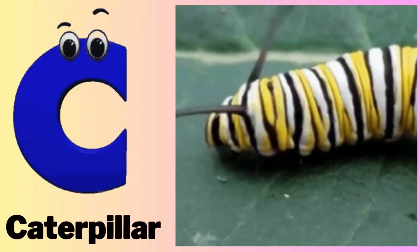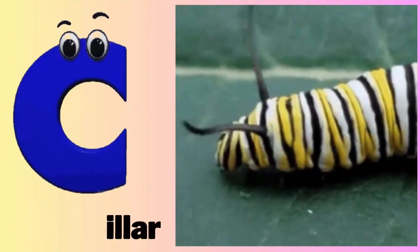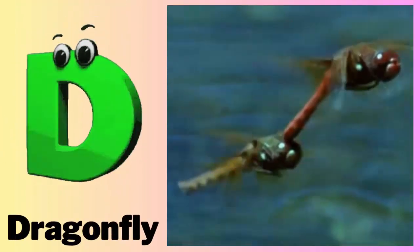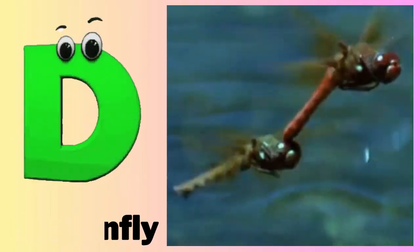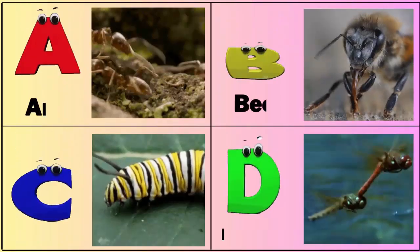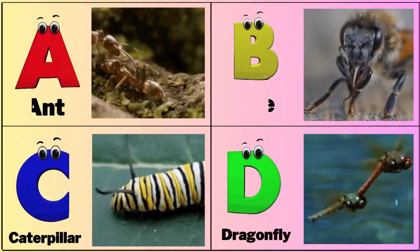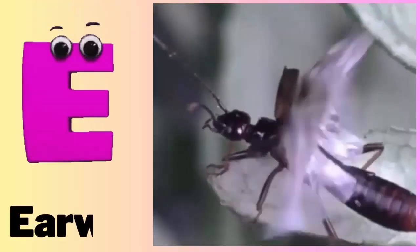C - C for Caterpillar. D - D for Dragonfly. E - E for Earwig.